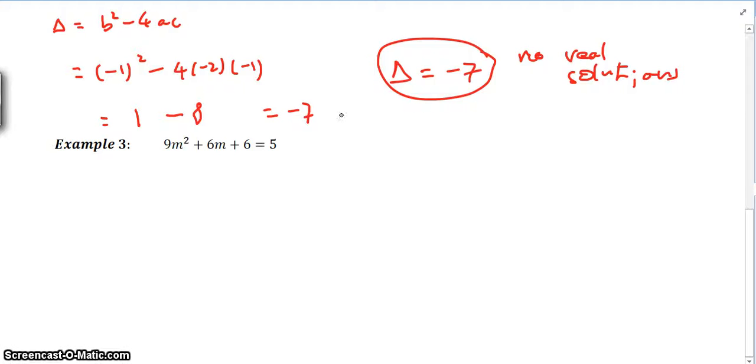Now the last case, let's have a look at this. So what I would do with this question first is rearrange it, because we usually like to have a coefficient or a term 0 or a y here. So it doesn't usually work if this is a 5. So this becomes 9m squared plus 6m plus 1. So this is a equals 9, b equals 6, and c equals 1.